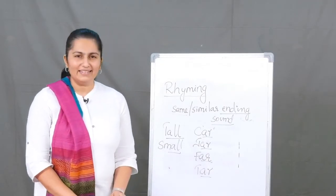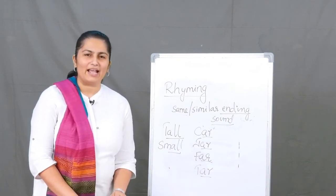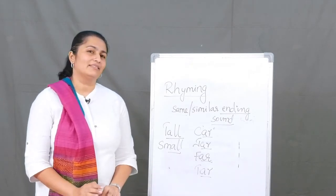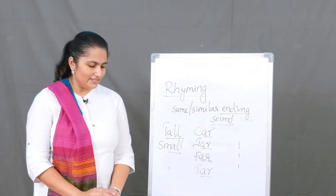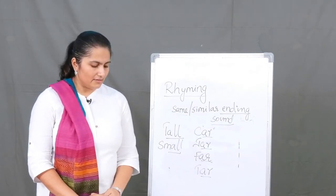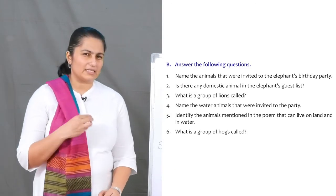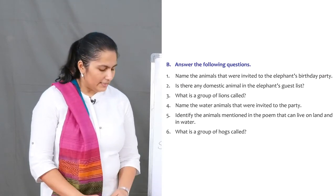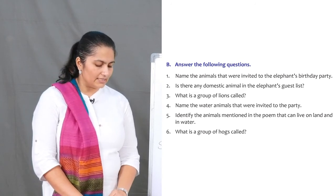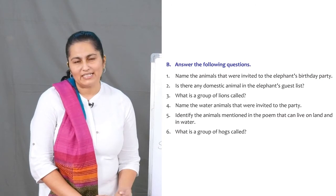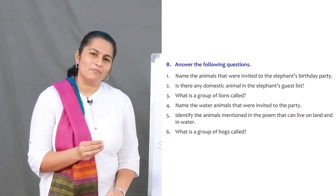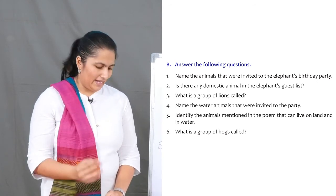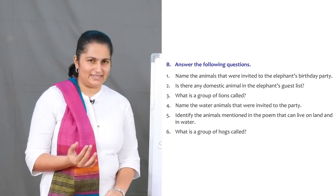Now it's time for question and answers about the poem. Take out your notebook and pen and get ready to write. You can pause the video right now and start writing, or wait till the end to write at leisure. The first question: name the animals that were invited to the elephant's birthday party. That's quite a long list! Remember, when you make the sentence it needs to start with a capital letter, end with a full stop, and make sense.